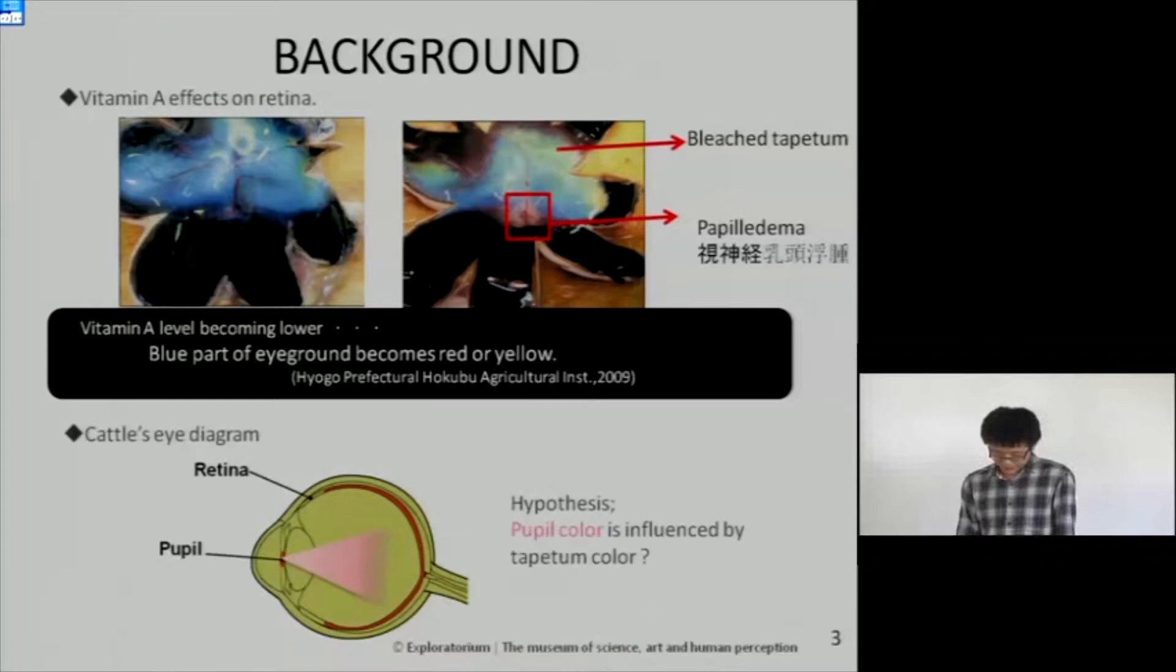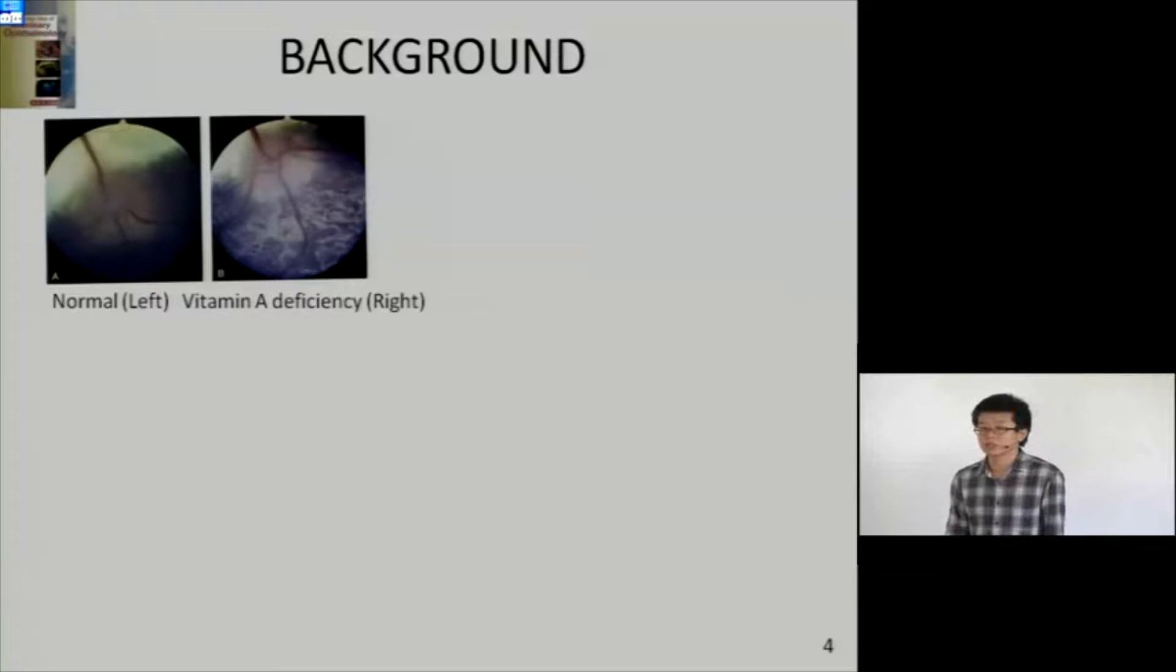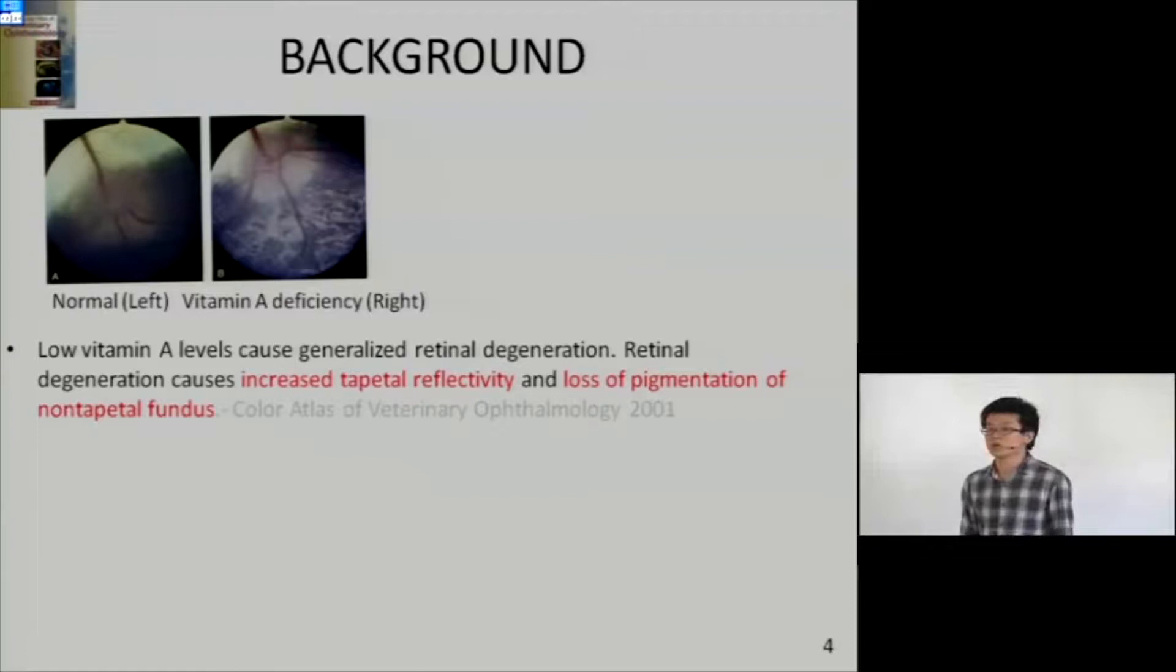They concluded that when the vitamin A level becomes lower, the blue part of the eye ground will become red or yellow. So our hypothesis is that we can observe this change from outside. That means if we see the pupil color, the pupil color can be affected by the background, the tapetum color.